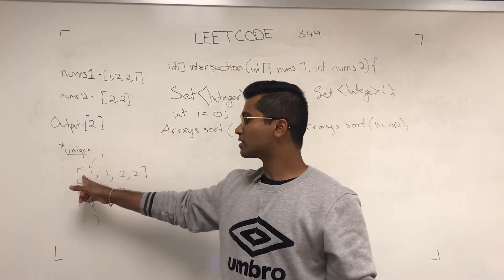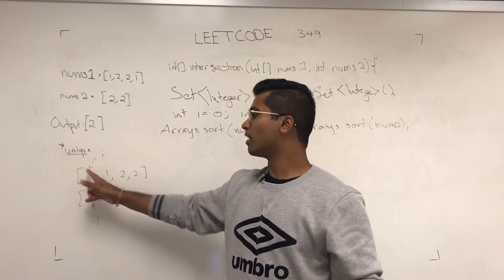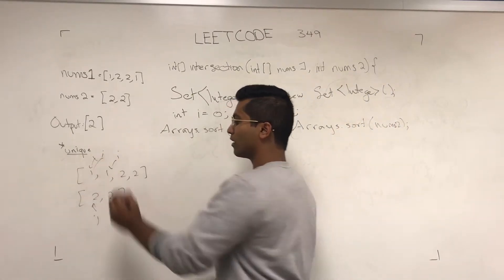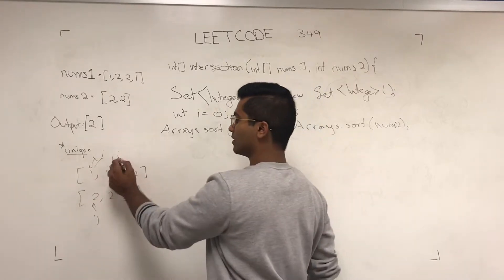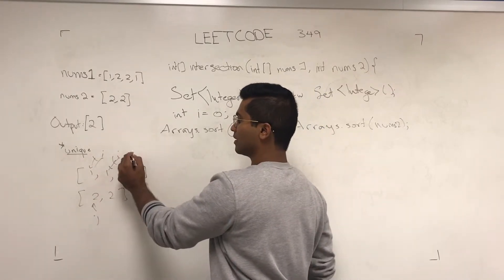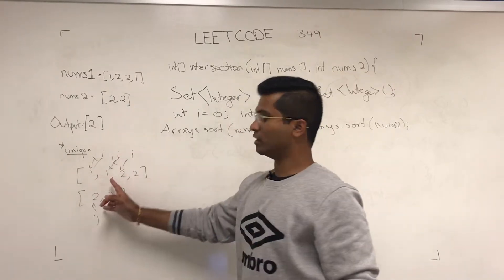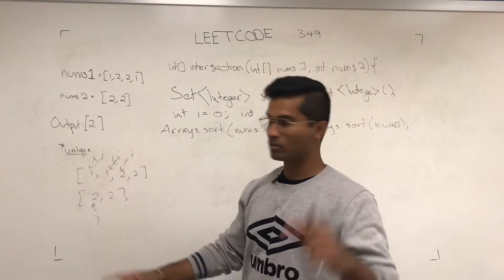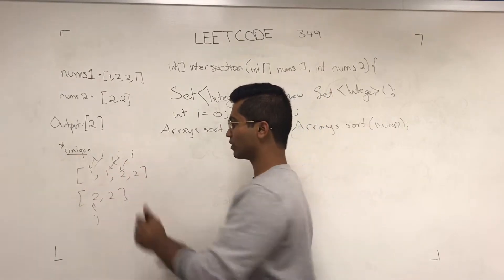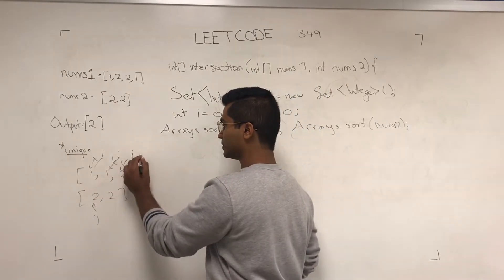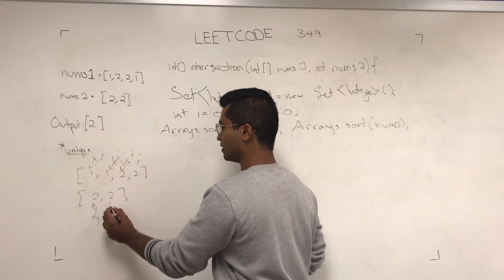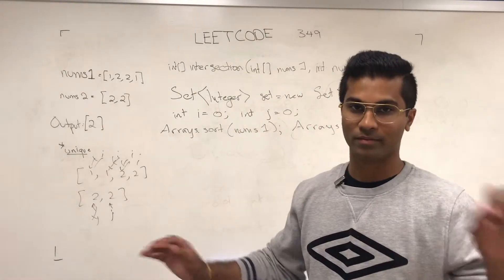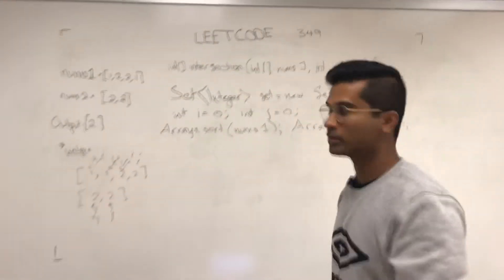But if they're not the same, then I'm going to move i over to here. Are these the same? They're not. These are the same. So we're going to take two and we're going to move both of these along. And that's pretty much how this problem is solved.